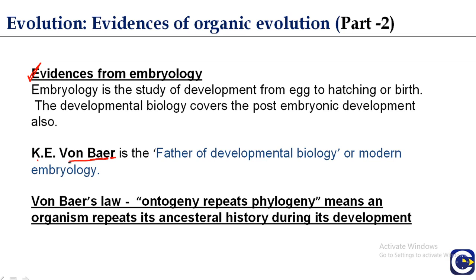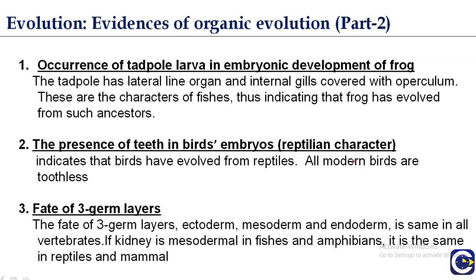K.E. von Baer is known as the father of developmental biology, or modern embryology. Von Baer gave the recapitulation theory, also known as von Baer's Law. He gave the famous statement: 'Ontogeny repeats phylogeny,' meaning an organism repeats its ancestral history during its development. Ontogeny means the life history of an individual animal; phylogeny means the evolutionary history of the race or species. So during the development of an organism, it always repeats its ancestral history.